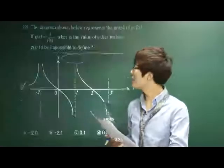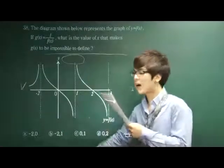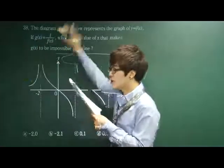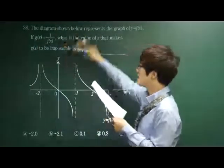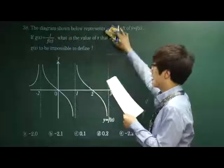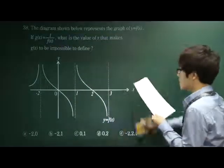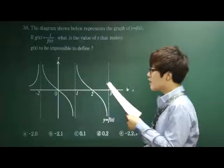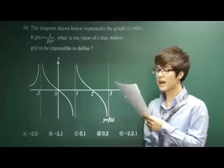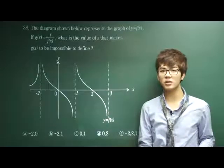Let's move on to the next question, number 38. The diagram shown below represents the graph of y equals f(x) function. If g(x) function is one over f(x) function, what is the value of x that makes g function to be impossible to define?